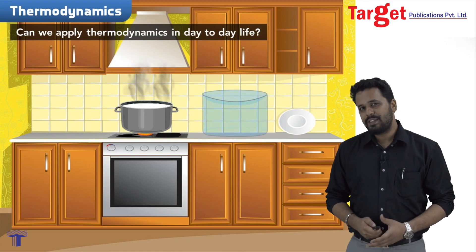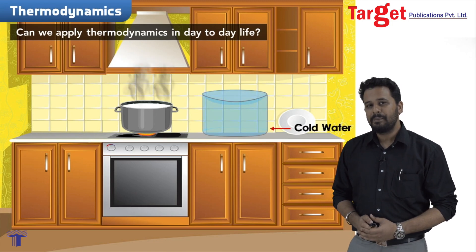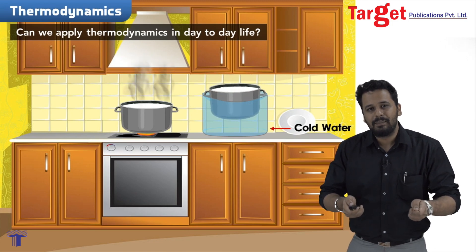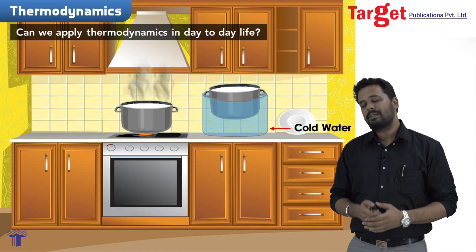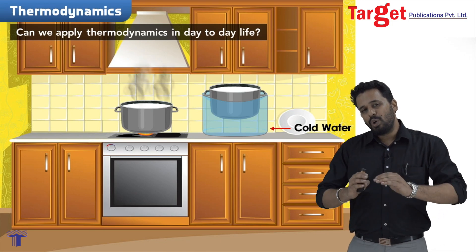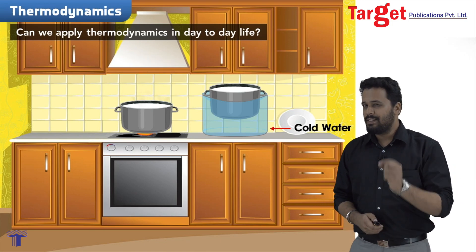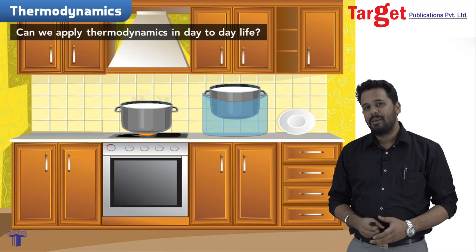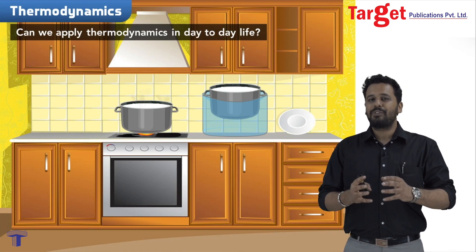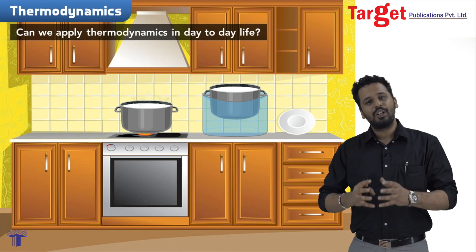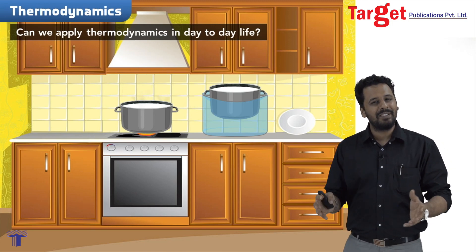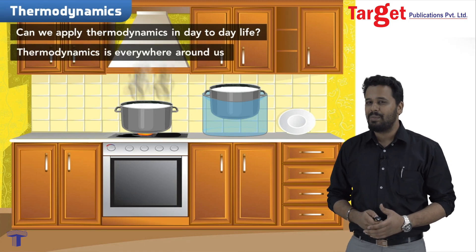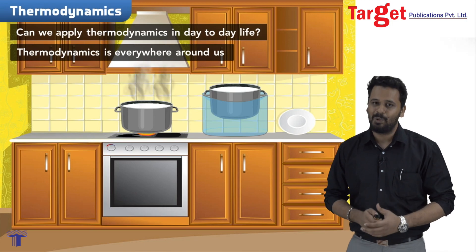So what did our mothers do? They would take a vessel with some cold water in it, put the milk inside, and shake the vessel. By doing this, the milk would lose its heat to the water, and this water would no longer remain cold. We have transferred some of the energy of the milk to the water — transfer of energy is a classical example of thermodynamics. So we can say that thermodynamics is everywhere around us.